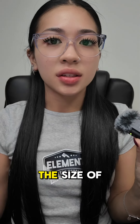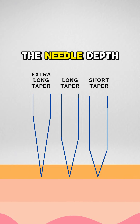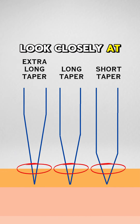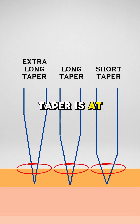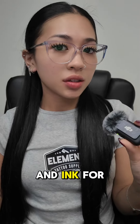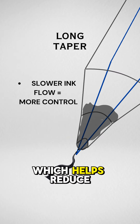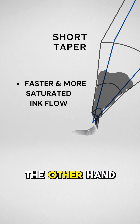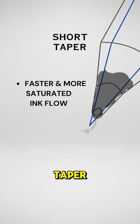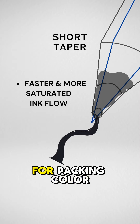The taper affects the size of the hole made when the needle punctures the skin. As you can see here, the needle depth is the same for all the tapers, but if you look closely at the entry point at which each taper is at, the size of the puncture wounds are all going to be different. With tapers and ink deposit, longer tapers do a better job of controlling ink flow, which helps reduce unwanted spread. On the other hand, shorter tapers deliver concentrated ink because the blunt taper allows more ink to flow into the skin with each pass, making them great for packing color.